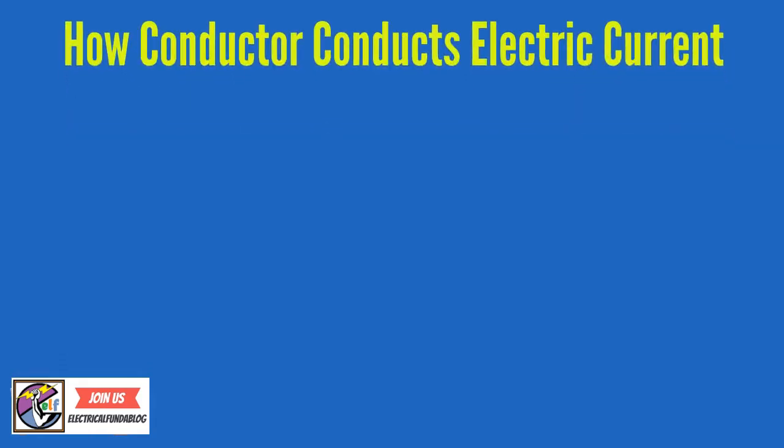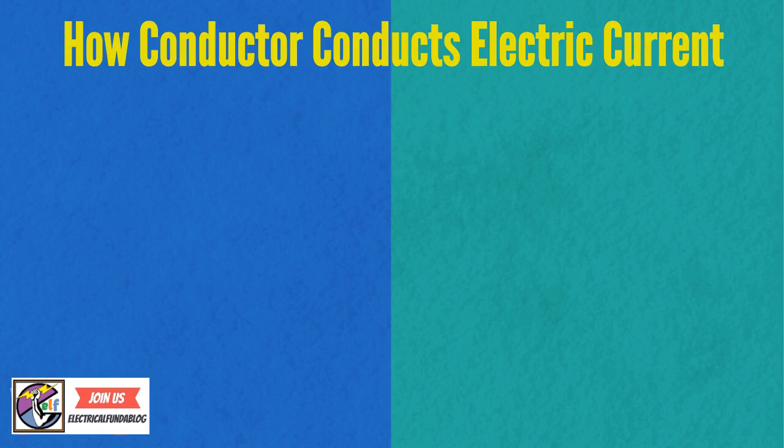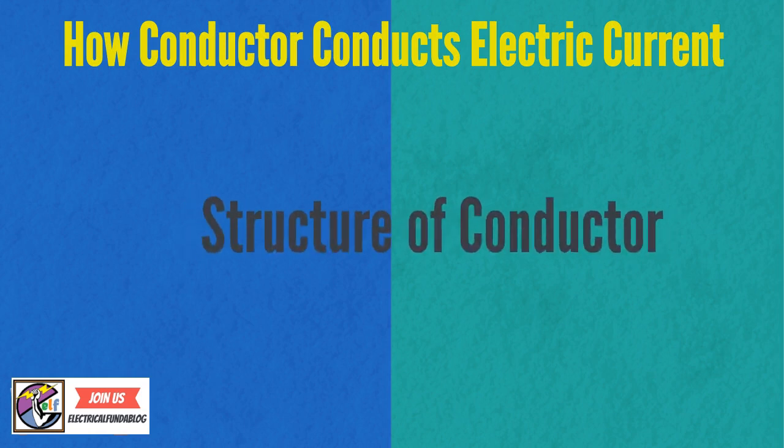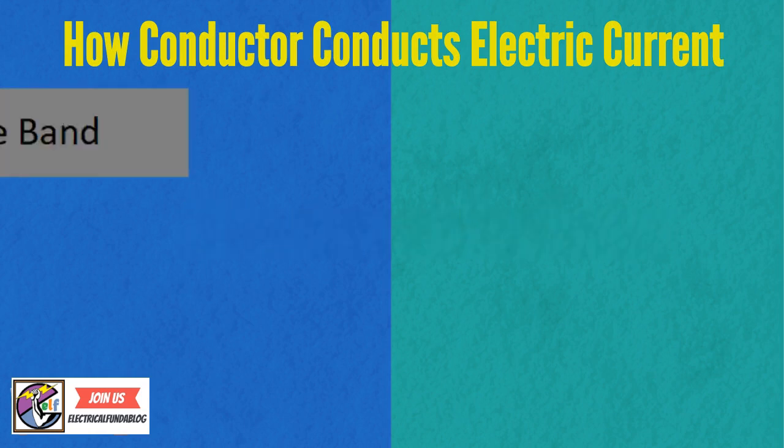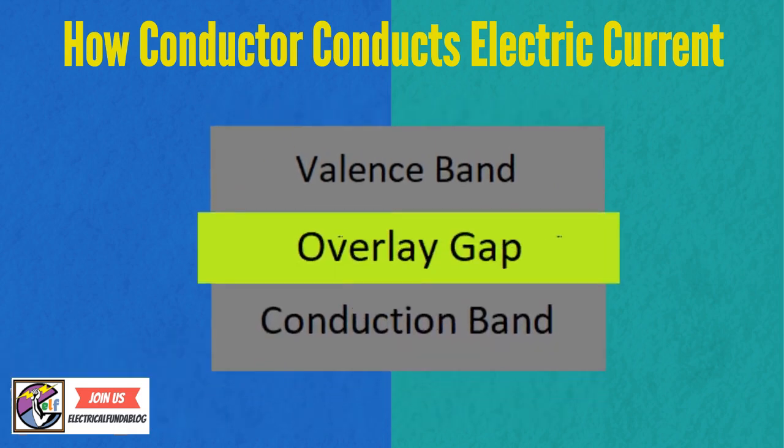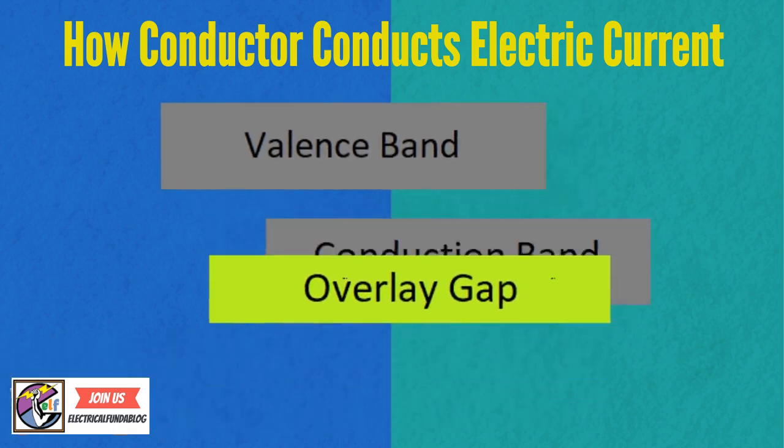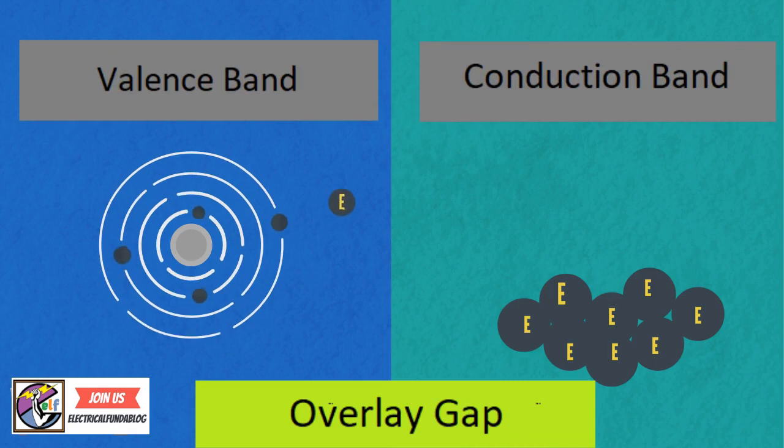Now see how conductor conducts electric current. Electric conductor inside atom structure consists of two parts: valence band and conduction band. In valence band, electrons can move from valence band to conduction band due to thermal effect. In conduction band, electrons are free to move anywhere.